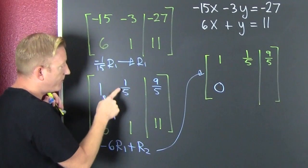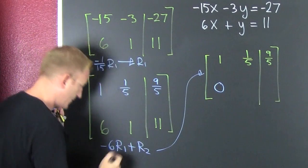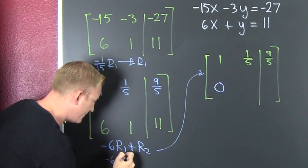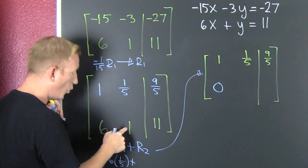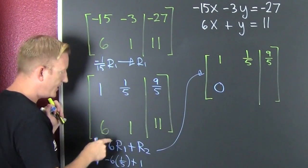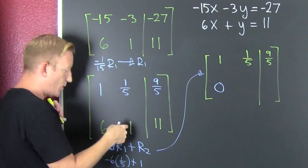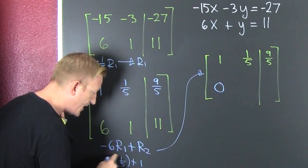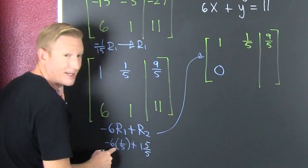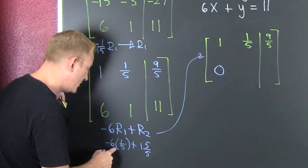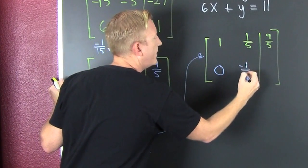And then we're doing minus 6 times 1/5 gives us minus 6/5. Minus 6 times 1/5 plus 1. Because it's minus 6 times row 1 plus row 2. And so that's minus 6/5. So then this is going to be 5/5. Because we've got to get a common denominator. And then minus 6 plus 5 is minus 1/5.